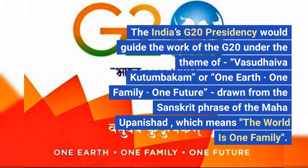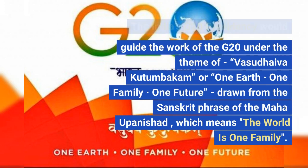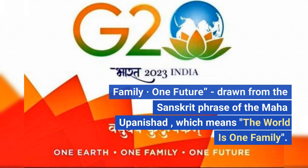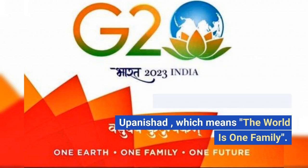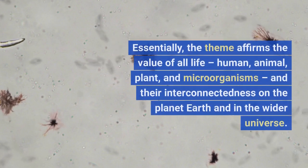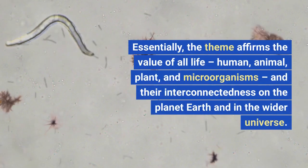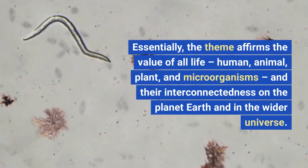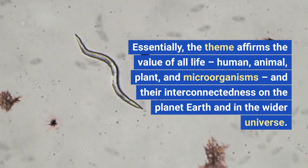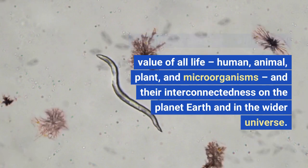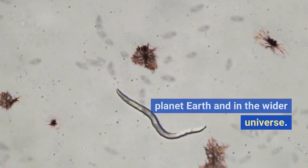India's G20 presidency would guide the work of the G20 under the theme of Vasudeva Kutumbakam, or One Earth, One Family, One Future, drawn from the Sanskrit phrase of the Maha Upanishad, which means the world is one family. Essentially, the theme affirms the value of all life — human, animal, plant, and microorganisms — and their interconnectedness on the planet Earth and in the wider universe.